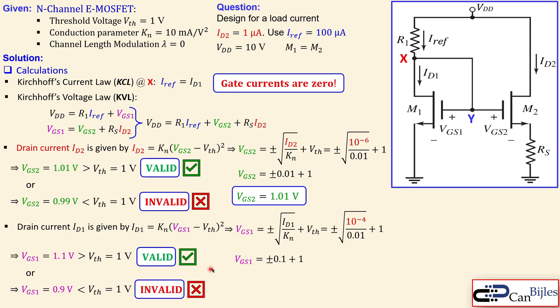Which is now indeed the case for the first, not for the second one, which is now not valid. So we have again our solution for the second case. So the VGS1 is 1.1 volts.